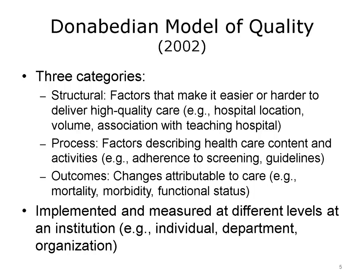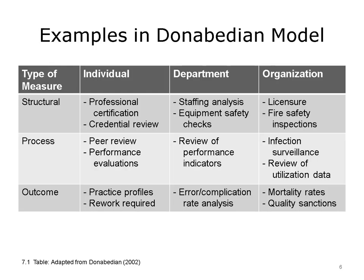These factors are implemented and measured at different levels within an institution, such as the individual practitioner level, the department level, and the organization as a whole. On this slide is a table that includes the types of quality measures and the levels at which quality is measured — individual, department, and organization — across the columns. Some structural measures include whether individuals are professionally certified, whether departments have appropriate staffing, and whether an organization has various licensures. Process measures include performance evaluation of individuals, monitoring of productivity, reviewing performance indicators at the department level, how much screening is done, and stated adherence to guidelines.